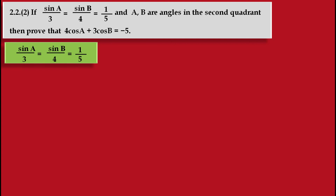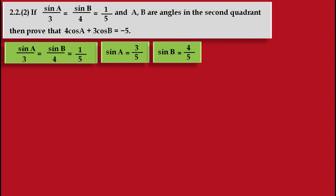First, we have to write the given condition: sin A upon 3 is equal to sin B upon 4 is equal to 1 upon 5. Now we have to find the values of sin A and sin B by using this condition. So we have to equate each ratio with 1 upon 5. Equating this, we get sin A is equal to 3 upon 5 and sin B is equal to 4 upon 5.